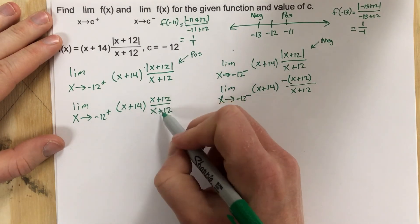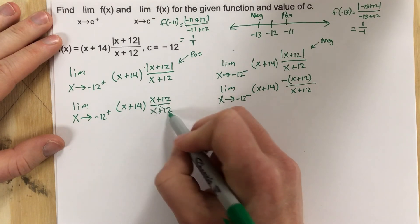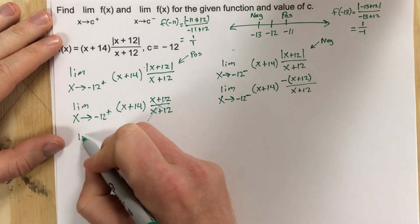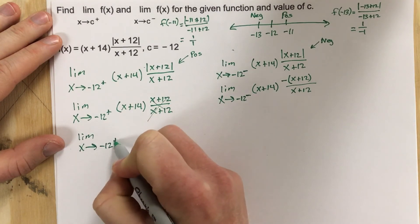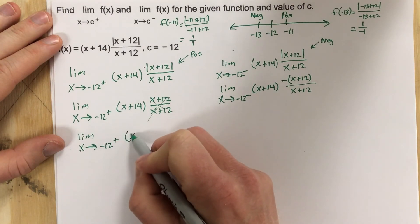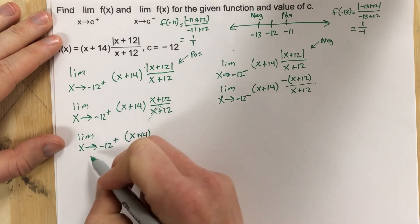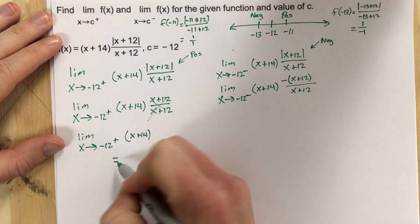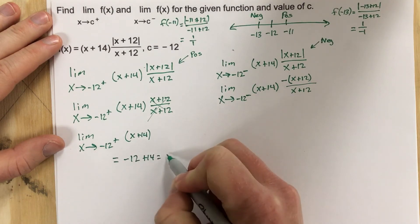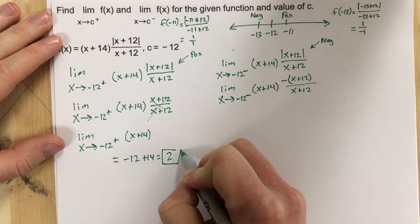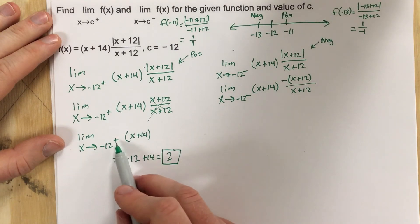From there we can cancel x plus 12 over x plus 12 — that cancels out completely. So we're left with the limit as x approaches negative 12 from the right of x plus 14, which equals negative 12 plus 14, which is 2. The limit as x approaches negative 12 from the right is 2.